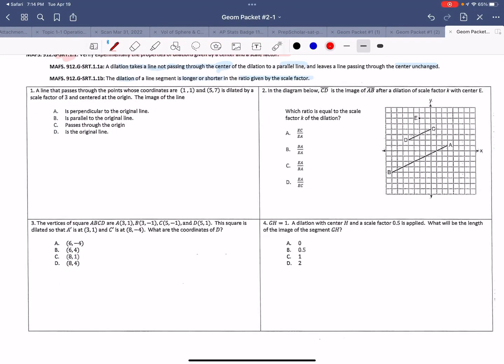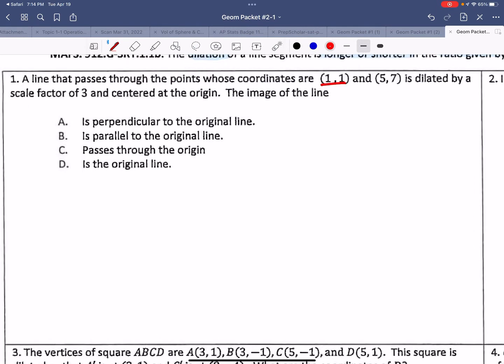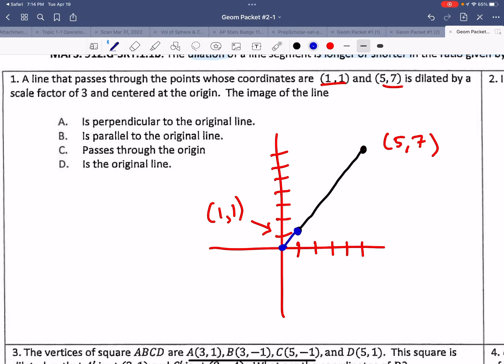Question number 1. A line passes through a point whose coordinates is 1 and 5. So (1,1). (5,7). Okay. A line that passes through the points whose coordinates are (1,1) and (5,7) is dilated by a scale factor of 3 centered at the origin. So what does that mean? This is (1,1). Now we're going to make it (3,3).